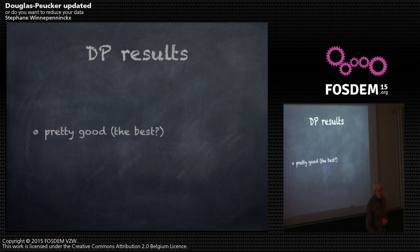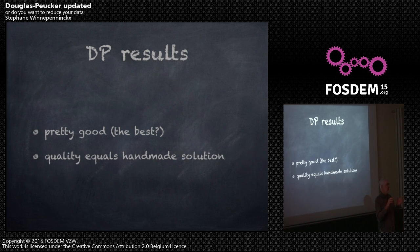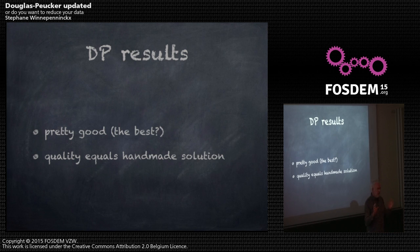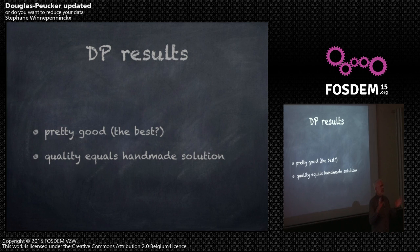The results of Douglas-Peucker are quite good, and the community says it is the best. It is the best because the quality of the resulting simplified polyline is very nearly what people can do by hand. The polyline produced when simplified is very comparable to what the Douglas-Peucker algorithm gives.